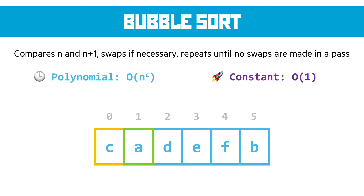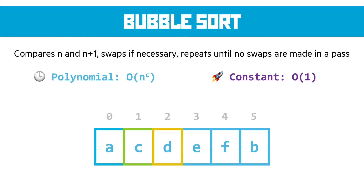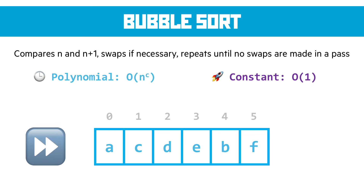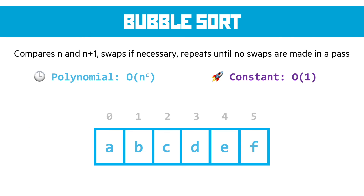Starting with n=0 and n+1, we compare the values and swap if they're in the wrong order. We increment n, moving the comparison window along. At the end of one pass, if at least one swap was made, the data isn't sorted, so we start again at n=0. In the next passes we swap B and E, then B and D, then B and C, and we have sorted data. This is why it's called bubble sort — the data appears to bubble in the direction of the sort.